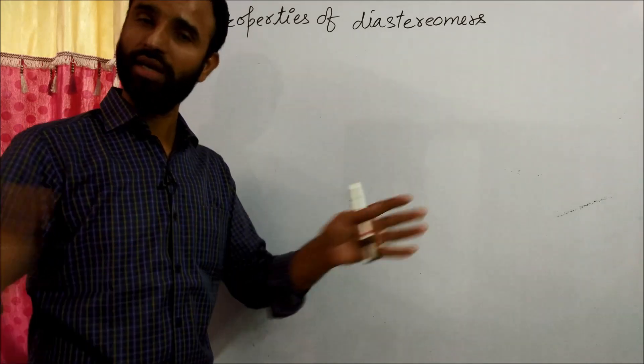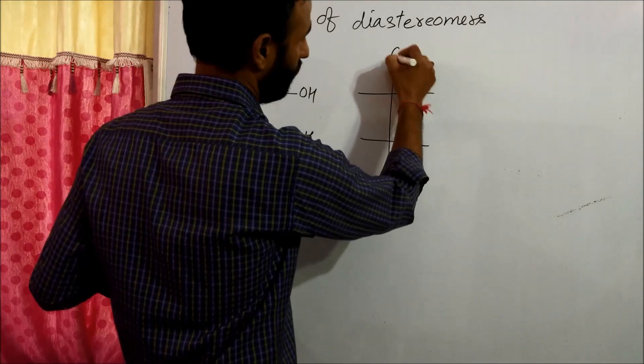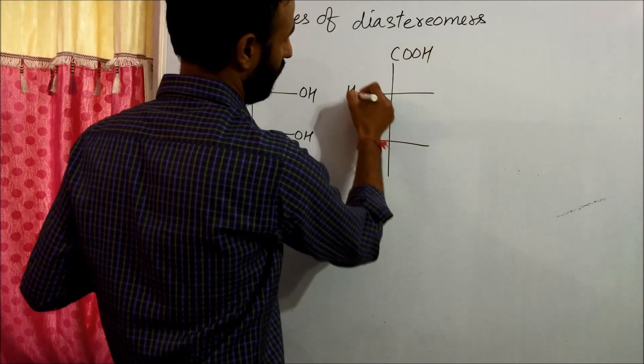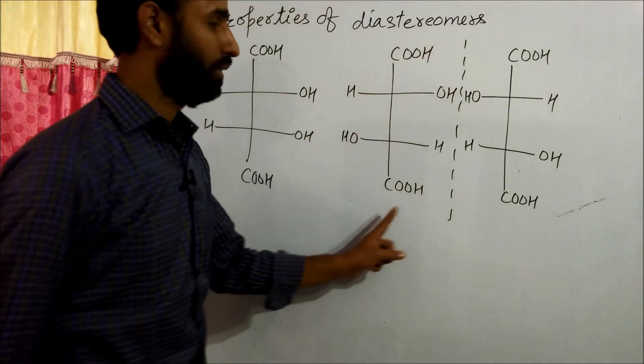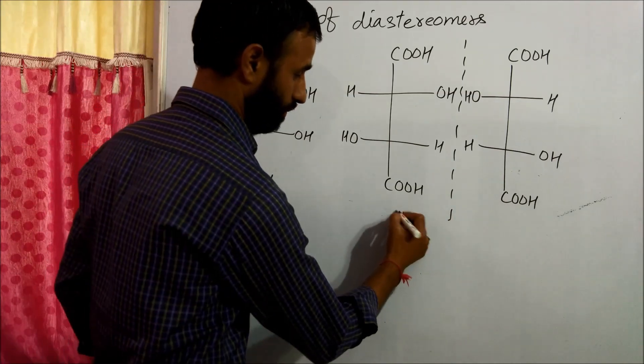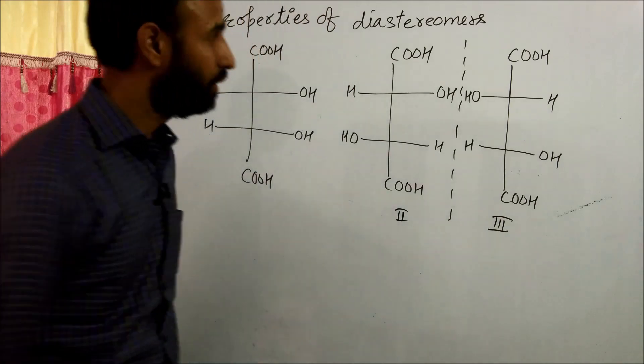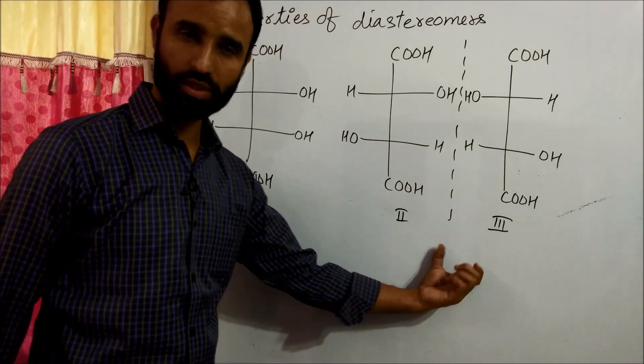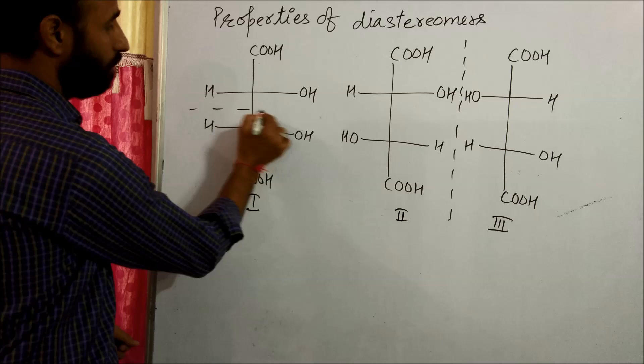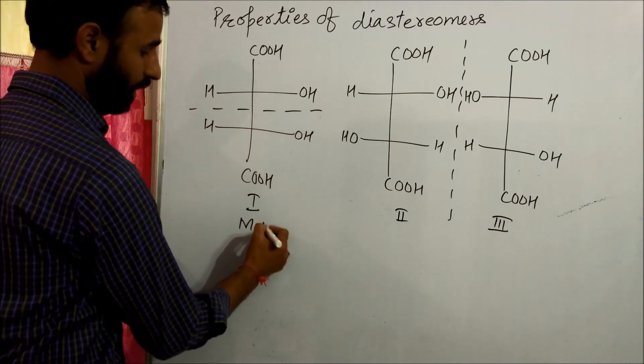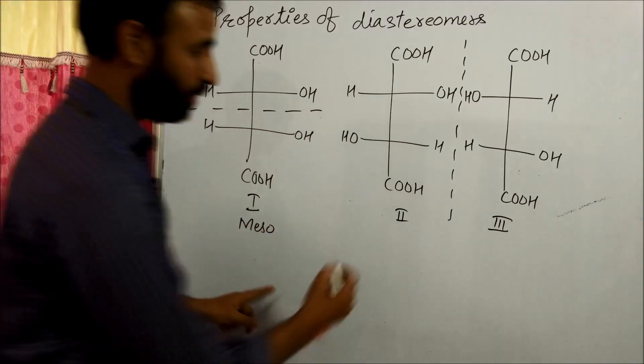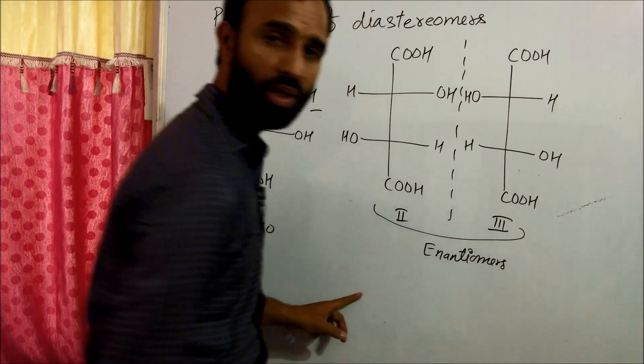These two are non-superimposable mirror images, so they are enantiomers. But one is a meso compound because it has plane of symmetry. Meso compound. They are enantiomers, D form and L form.